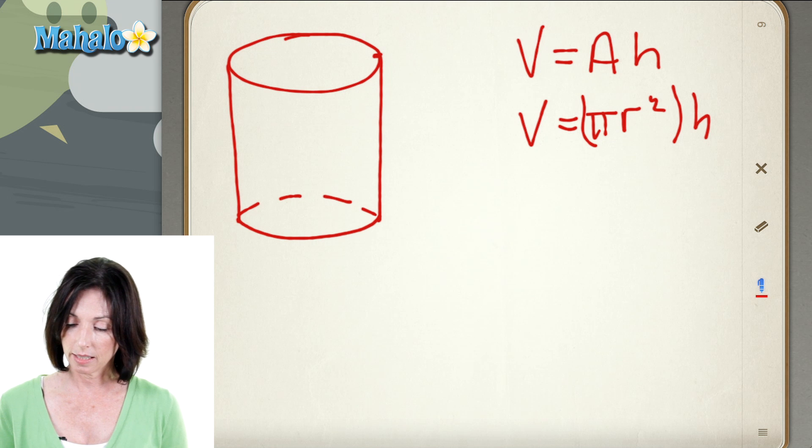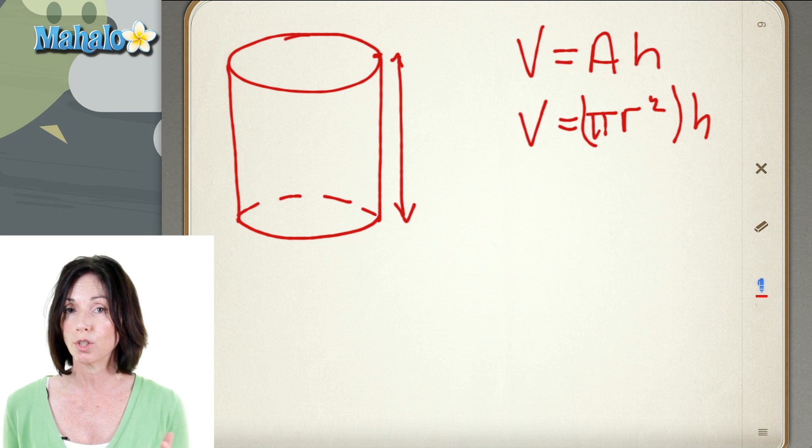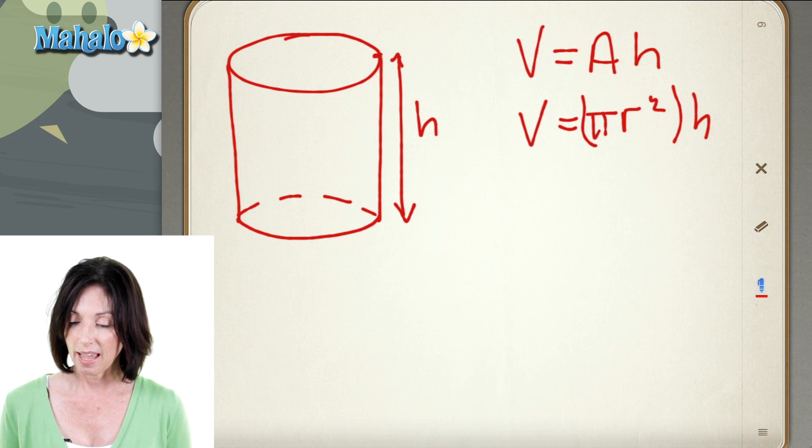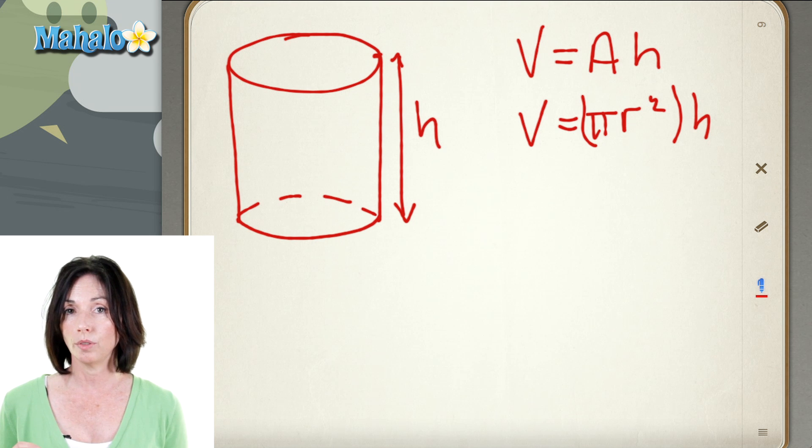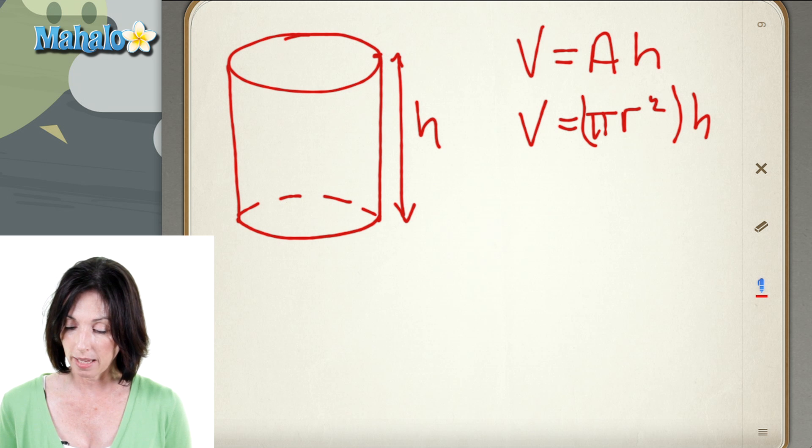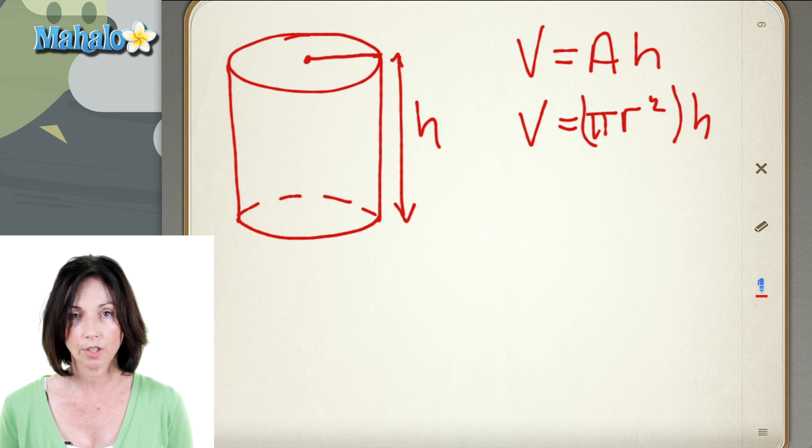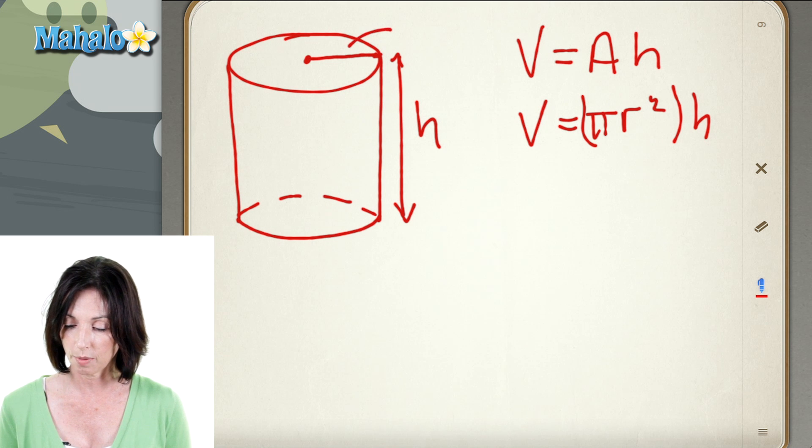Now, the height is this vertical distance, basically the length of the cylinder, the distance between its two circular bases. And the radius that you need to calculate the area of the base is the distance from the center to the edge. So that would be the radius right there.